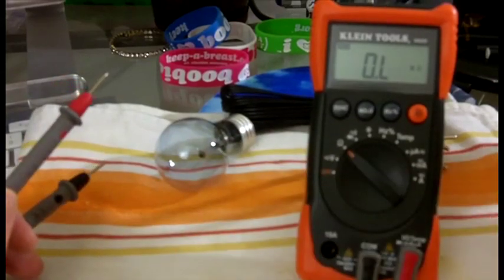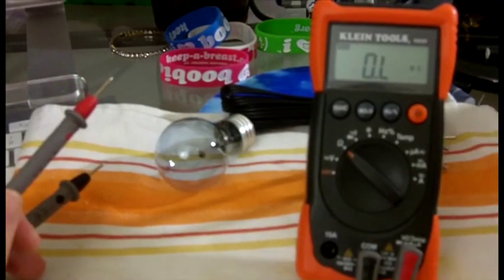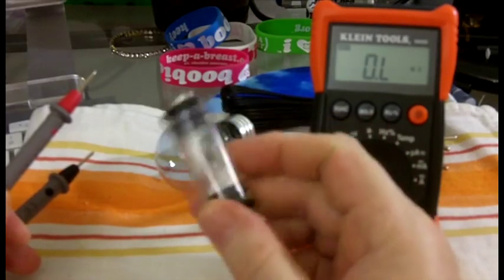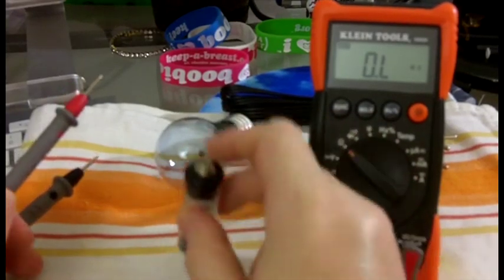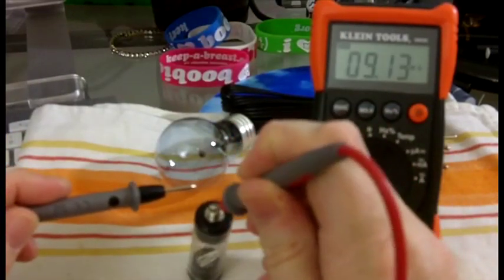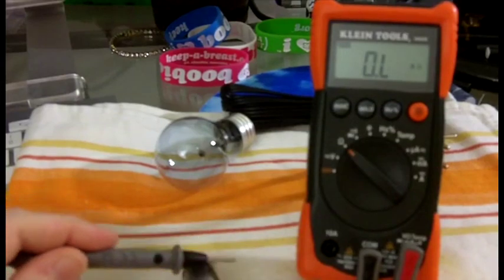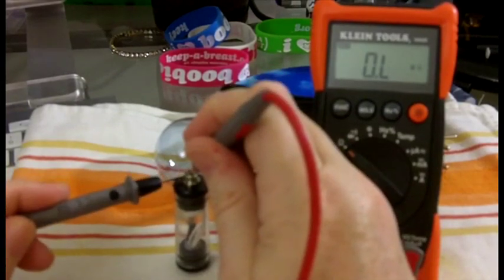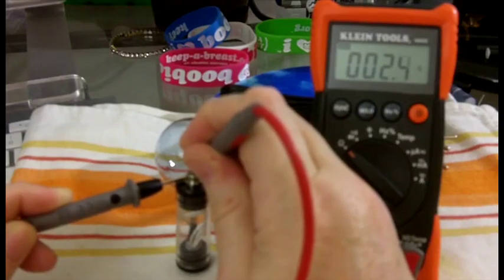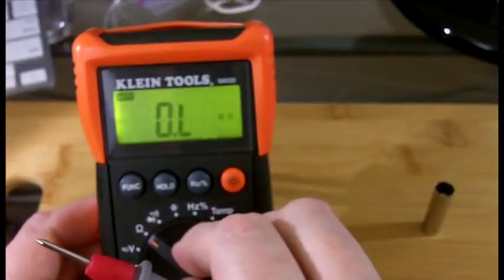The other thing that this is really useful with is I have several tanks. And sometimes I can't remember what of the different kinds of CE2s I shoved in there. Same thing. Turn it down. Black to the threads. Red to the posts. 2.6. 2.5. So it's a 2.4 to 2.6 CE2 that I have in there.